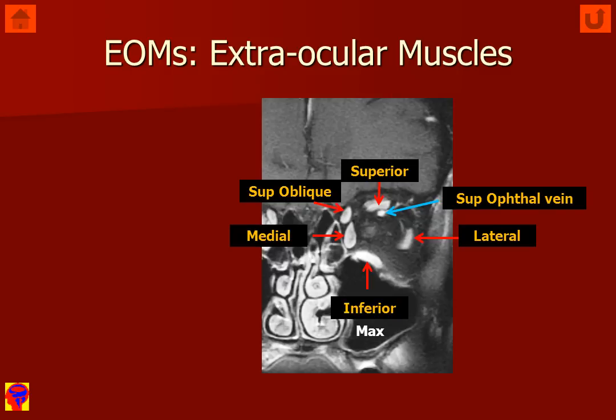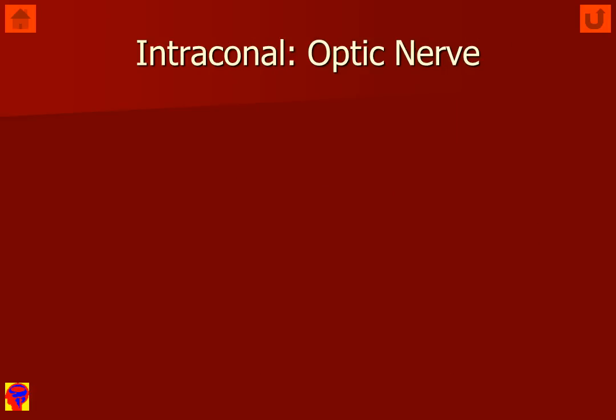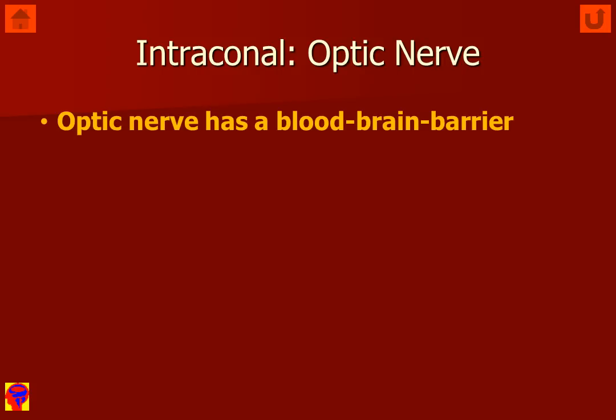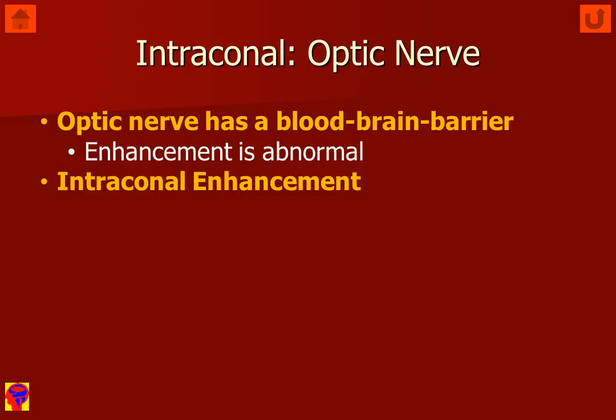Orbital masses are most commonly classified as being extraconal, conal, or intraconal. We're going to be talking today about intraconal masses and abnormal enhancement and lesions involving the optic nerve. The optic nerve has a blood-brain barrier and the normal optic nerve does not enhance; therefore enhancement of the nerve is abnormal.